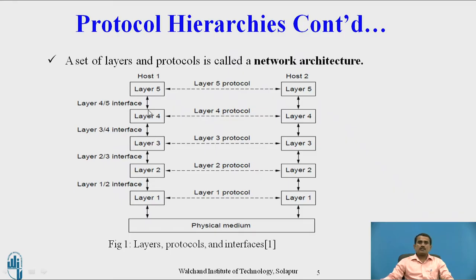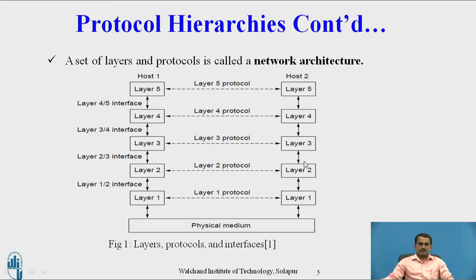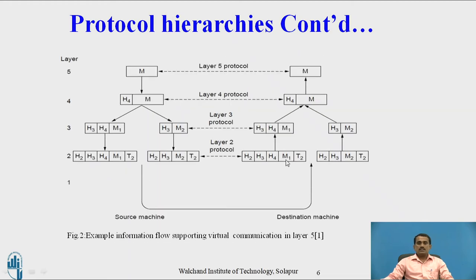When layer 3 is free, layer 4 can pass the data to the next layer. Then layer 3 interfaces with layer 2, and layer 2 interfaces with layer 1. After interfacing, they send the data to the receiver side through the physical medium. In the receiver side, the same concept applies — they have to interface with each other; if the next layer is busy, they wait; if it is free, they pass the data. Both sender and receiver layers virtually communicate with each other while transmitting the data.